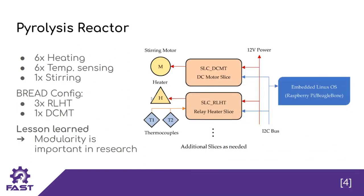I want to go into some case studies where I made a BREAD system specific for an application. For the pyrolysis reactor, we wanted six heating controllers, six temperature sensors, and a stirring motor for our dissolution tank — to turn plastic waste into gas, oil, and lubricant. The BREAD configuration for this was three relay heater slices and one DC motor slice. We learned a valuable lesson: modularity is very important in research. After we built this system, the chemist said they actually wanted eight heaters and eight thermocouples, and all we had to do was add another relay heater slice, rather than designing a whole new system.